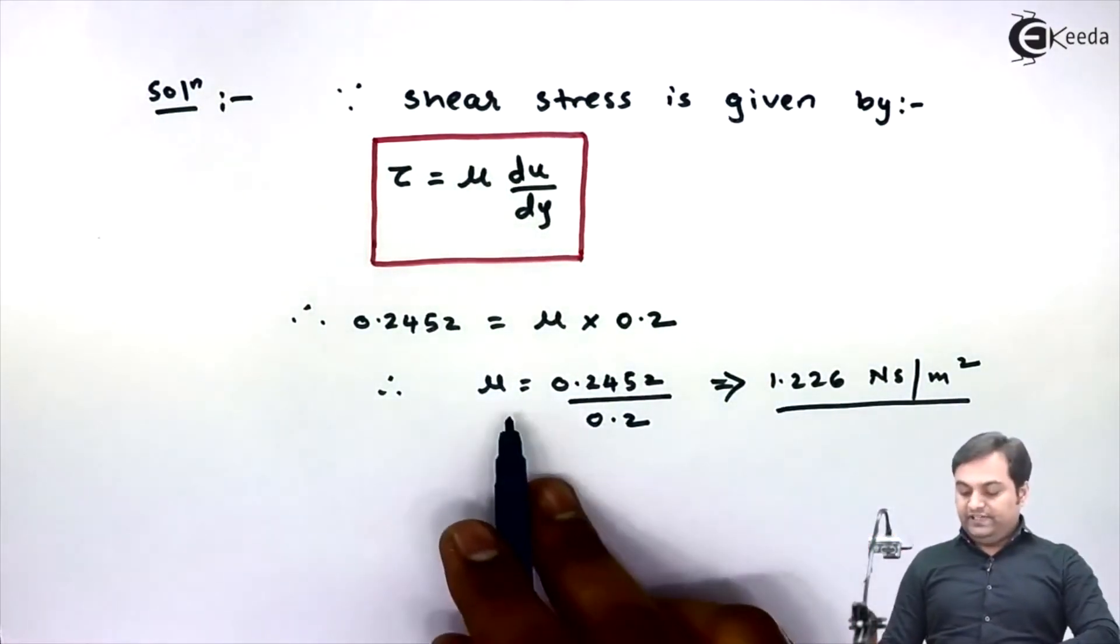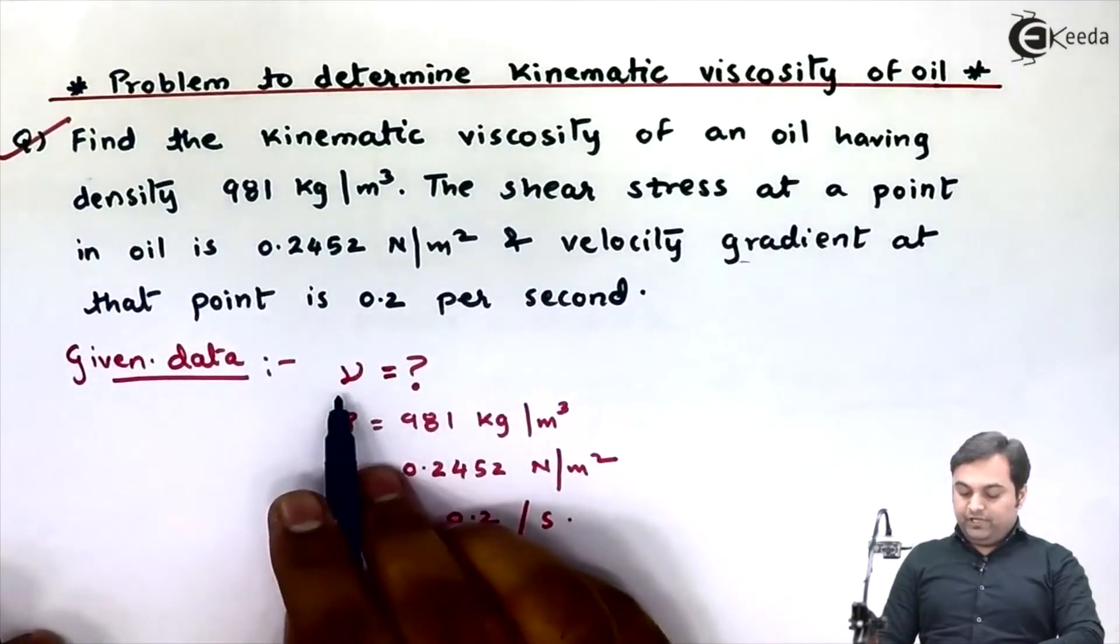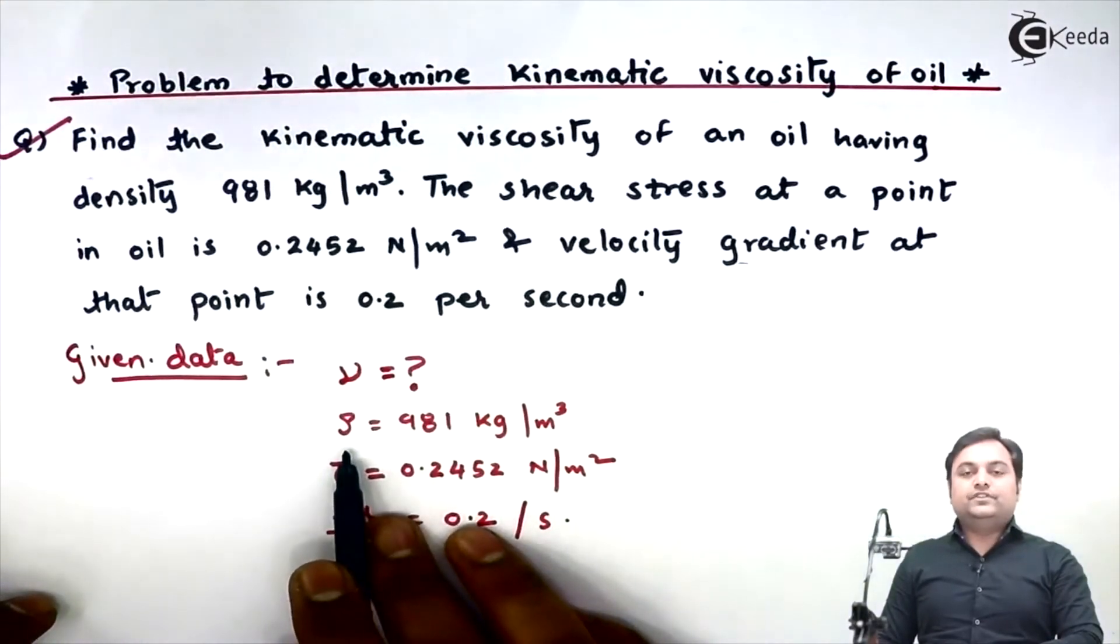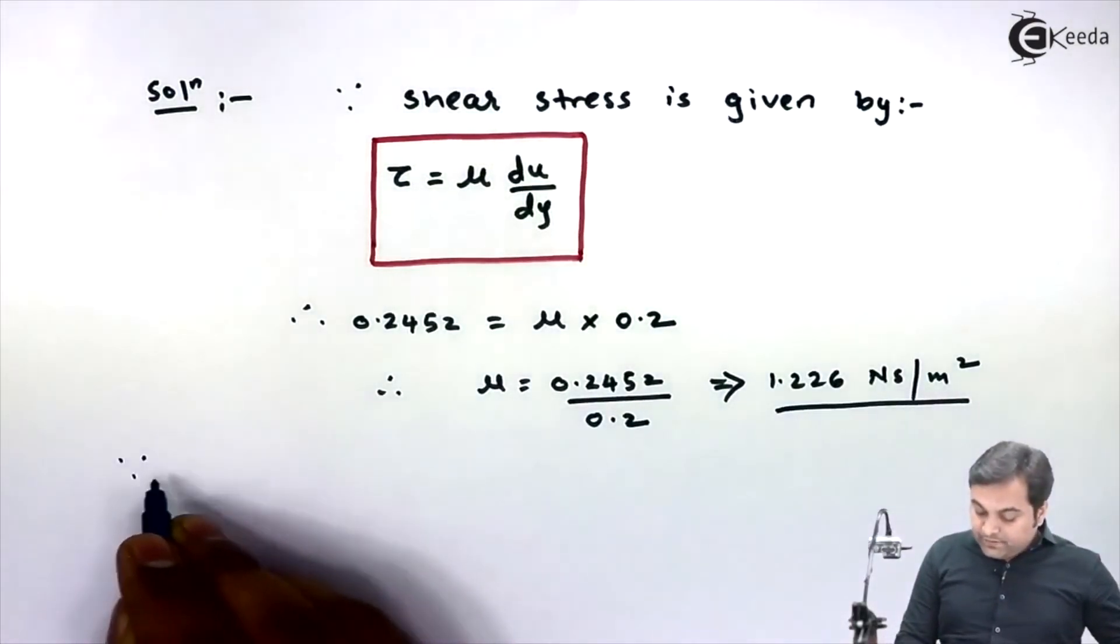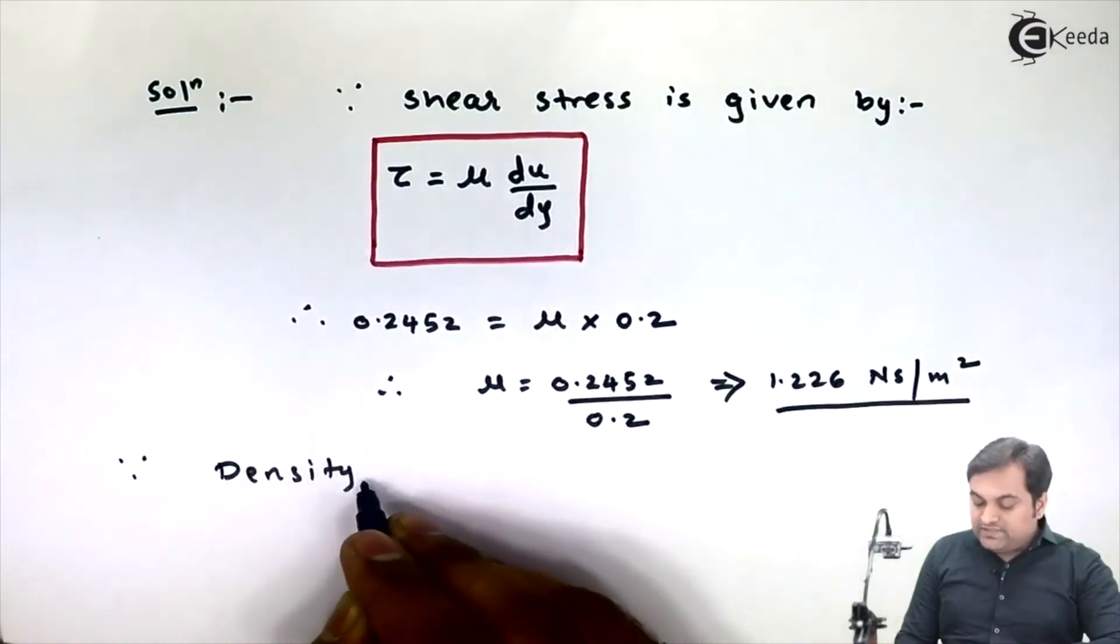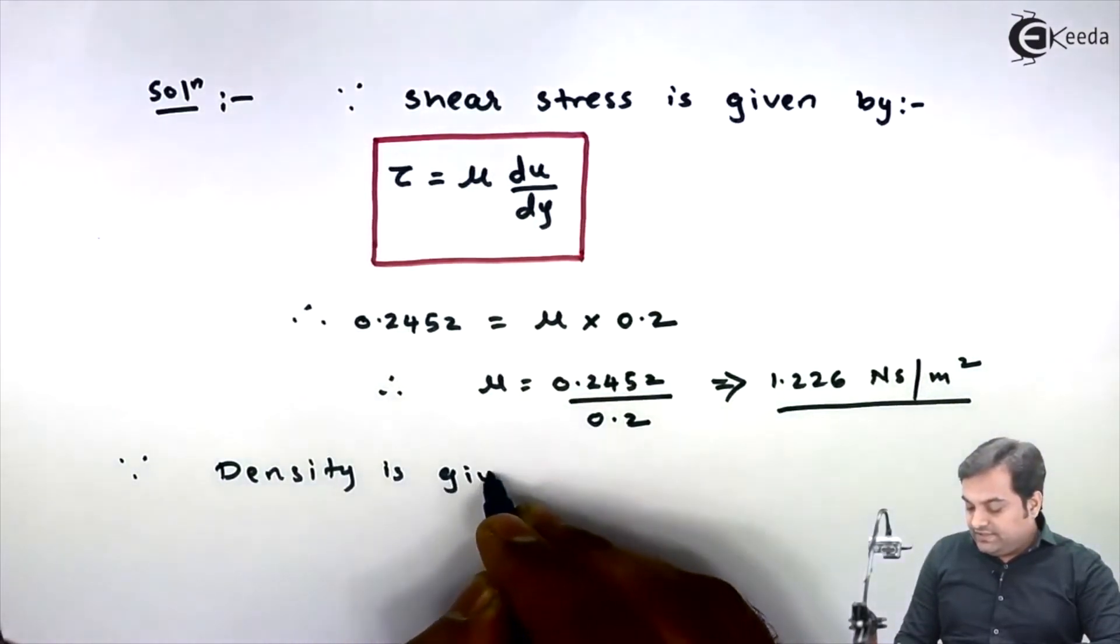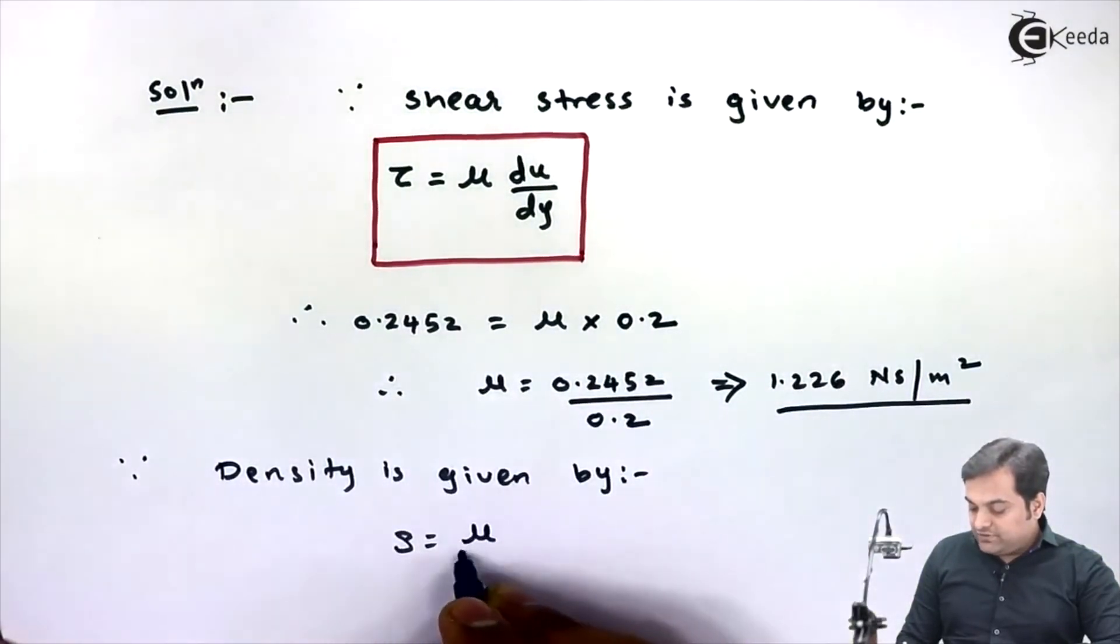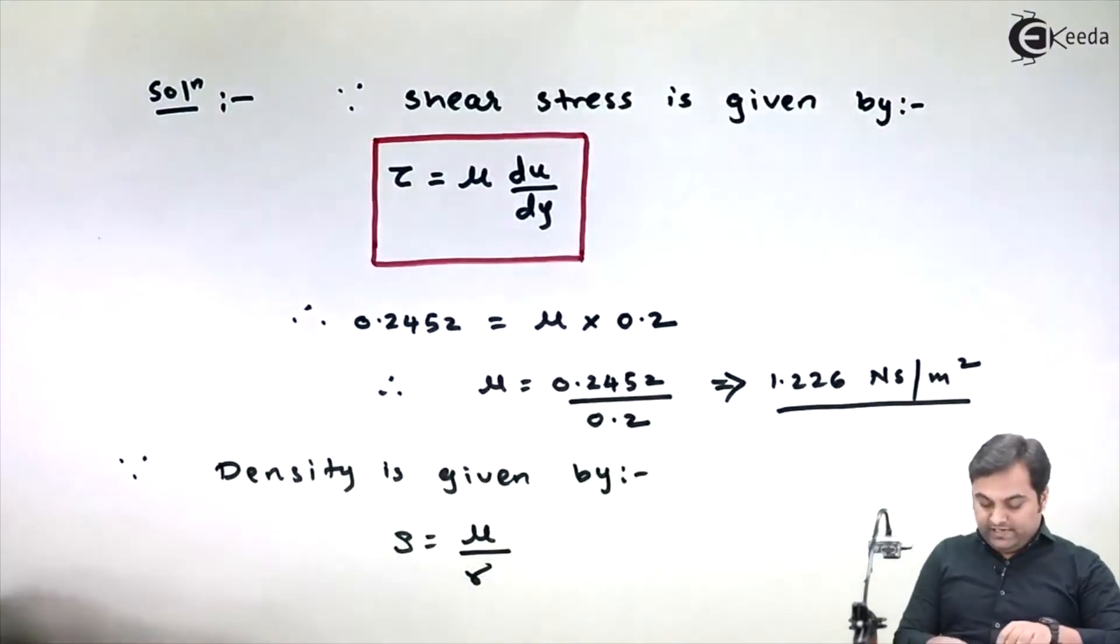Now after getting mu, in the question here it is mentioned we have to calculate kinematic viscosity and density is also given. So I'll use one relation. Since density, also called mass density, is given by the formula rho equals mu upon nu, dynamic viscosity upon kinematic viscosity, I'll highlight this.